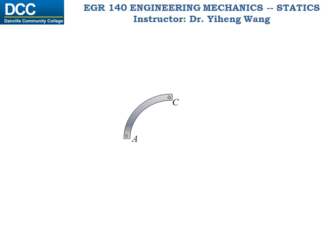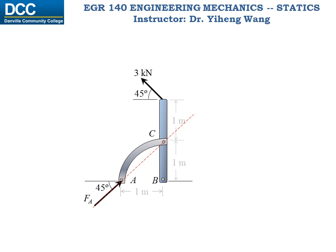However, if we realize that member AC is actually a two-force member — since it is only subjected to forces at two points A and C — therefore the forces acting on it must be along the line that connects these two points. Now we no longer have two unknowns at pin support A, since we can determine the direction of the force. Now we can again treat the assembly as one system.